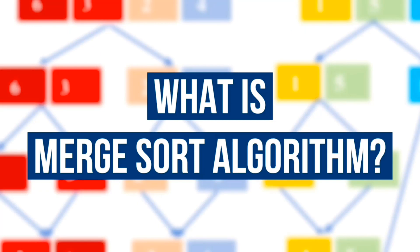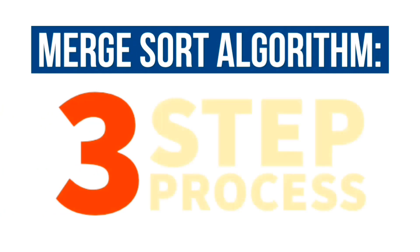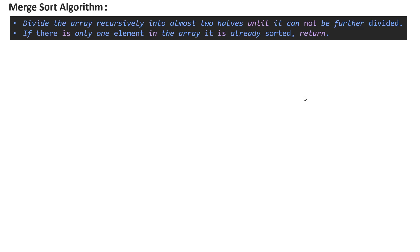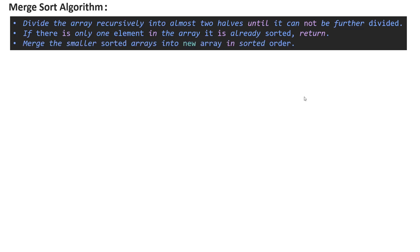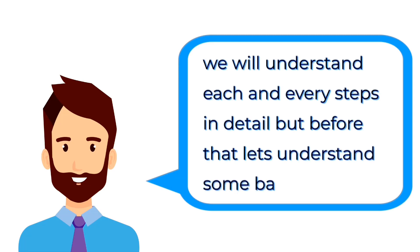Let's try to understand what is the merge sort algorithm. Merge sort algorithm is a simple three-step process: first, divide the array recursively into almost two halves until it cannot be further divided. If there is only one element in the array, it is already sorted and returned. And the last step is to merge the smaller sorted arrays into a new array in sorted order. We will understand each and every step in detail.